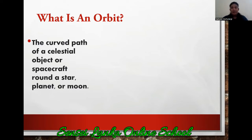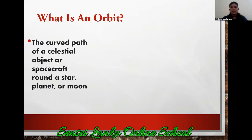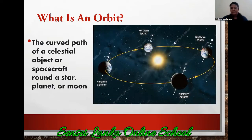The curved path of a celestial object — this curved path is called the orbit. Now look at this. Can you see the path of our planet earth? This is the path of our planet.